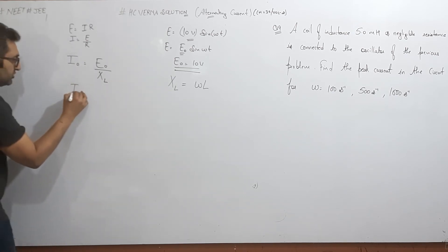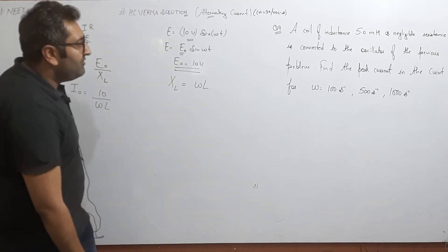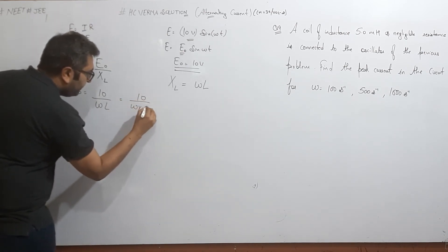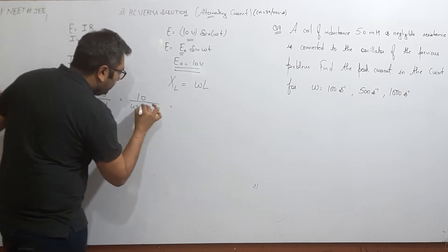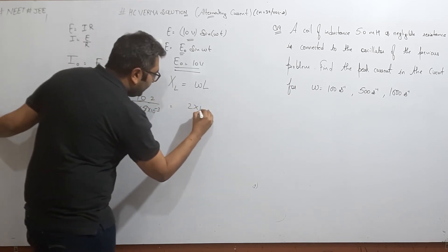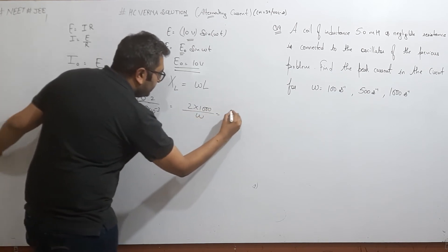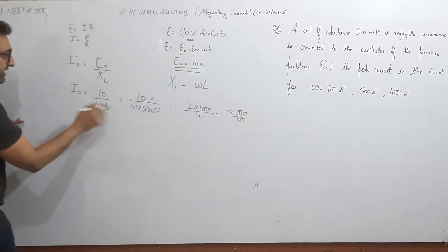Now, i not ko mein nikaal na. E not ki value which is given 10, XL is omega L. L ki value is given, that will be 5 millihenry, which is equal to 10 divided by omega 5 into 10 to the power minus 3. And this becomes 2, and 2 multiply 10 is to the power 3000. And omega, 2000 by omega. Yeh actual i not ki extended equation ban gaya. Ab aapko kya karna hai, just omega ki value daalte jao, you will get the answer.